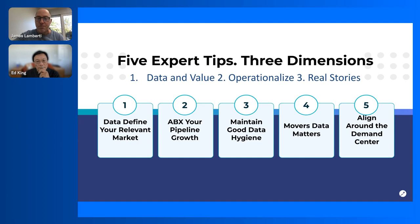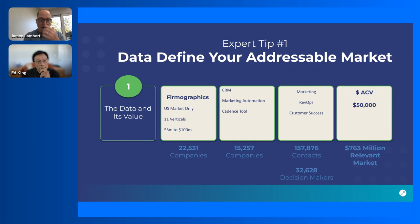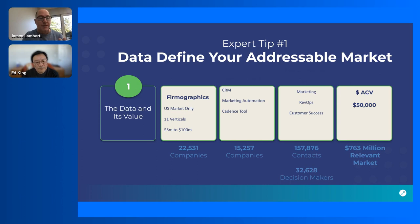Here's a real live example of how I use Sales Intel every day as CMO. The data and its value: in the first bucket we have firmographic data — US market only, 11 verticals, company size of $5M to $100M. I then add technographics: I care about three key technographics — CRM, marketing automation, and cadence tools. That takes me from 22,500 companies down to about 15,250.